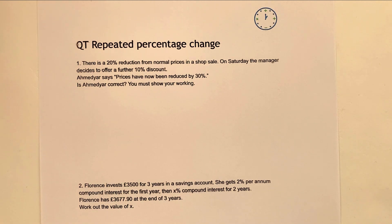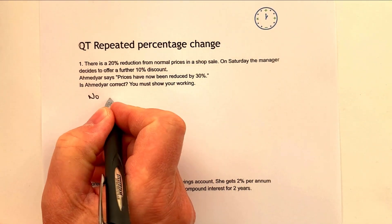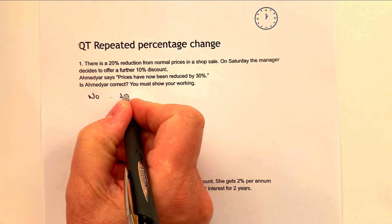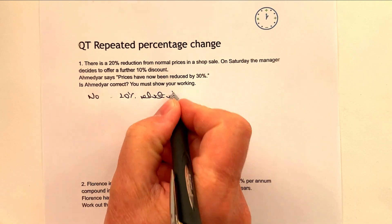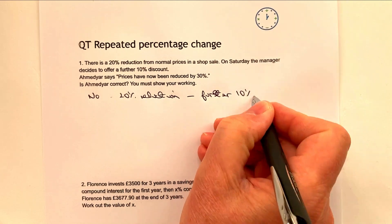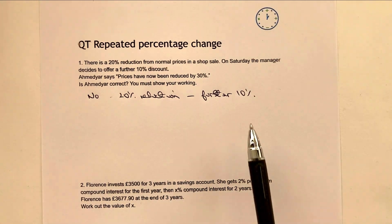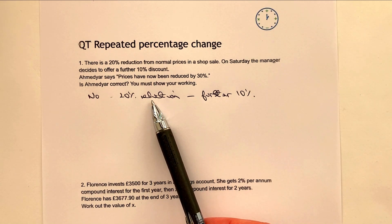There is a 20% reduction from normal prices in the shop sale. On Saturday, the manager decides to offer a further — and this is the key issue here — a further 10%. So actually prices have not been reduced by 30% overall. The reason for that: you've got a 20% reduction and then a further 10%. This further 10% is 10% of the already reduced prices.